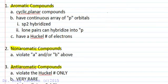So what are the criteria for classifying organic compounds as aromatic, non-aromatic, or anti-aromatic? Well, aromatic compounds are cyclic molecules that contain a continuous array of p orbitals, so everything's sp2 or sp hybridized, and have a Huckel number of electrons.